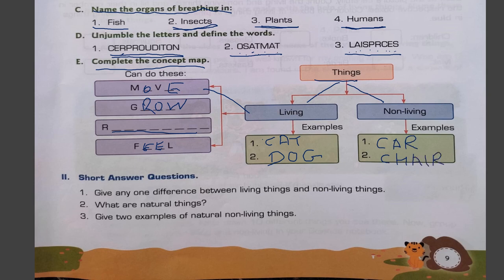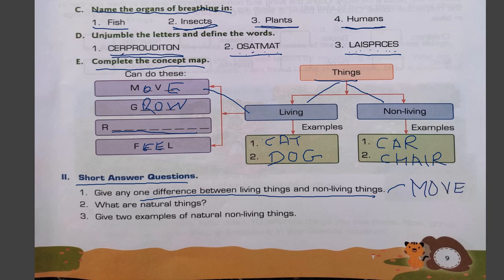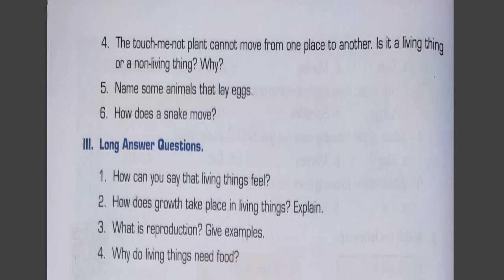Short answer questions. One difference between living and non-living things: living things can move on their own whereas non-living things do not move on their own. What are natural things? Things which are made by God are known as natural things — for example, the moon and sun. Give two examples of natural non-living things: moon, sun, soil, and water. The touch-me-not plant cannot move from one place to another — is it a living thing? Yes, plants use different movements but they are living things; when we touch the touch-me-not plant it closes up.